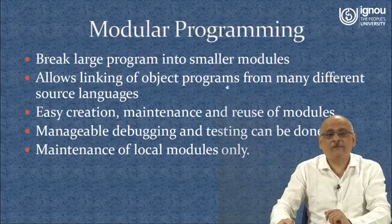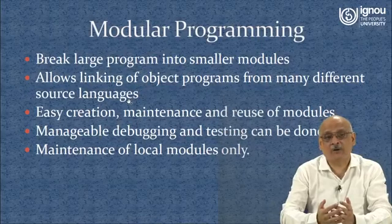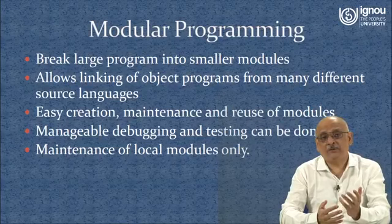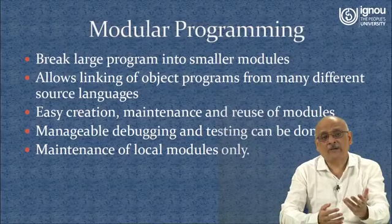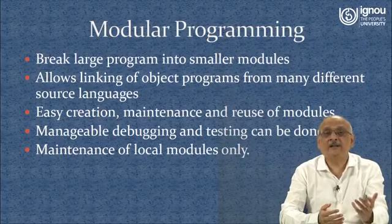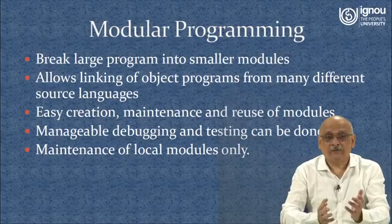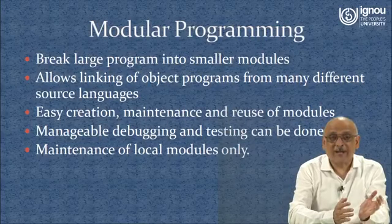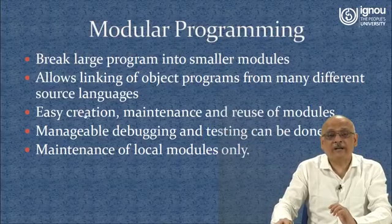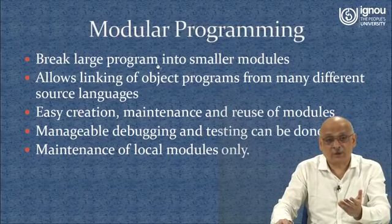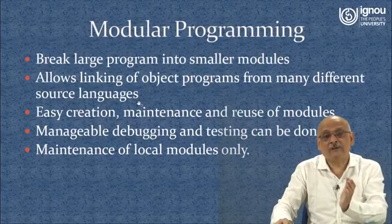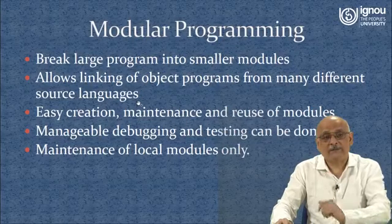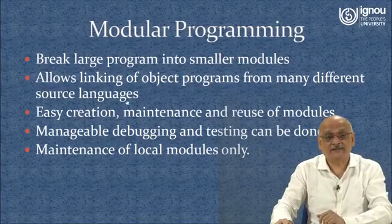Modular programming allows linking of object programs from many different source languages. Many times you will hear that an operating system is written in one high-level language like C or C++ and assembly language. We are writing programs in two different languages, but their object programs can be combined with the help of modular programming by using parameter passing and so forth, allowing us to execute a program consisting of several parts. Another important advantage is easy creation, maintenance, and reuse of modules.